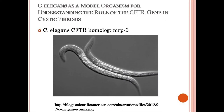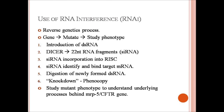The nematode C. elegans can be used as a model organism to understand the role of the CFTR gene in cystic fibrosis, thanks to the presence of a CFTR homolog, MRP5. Since C. elegans is easy to propagate and has a short generation time, an experiment using the reverse genetic process of RNA interference, or RNAi, can be used successfully.